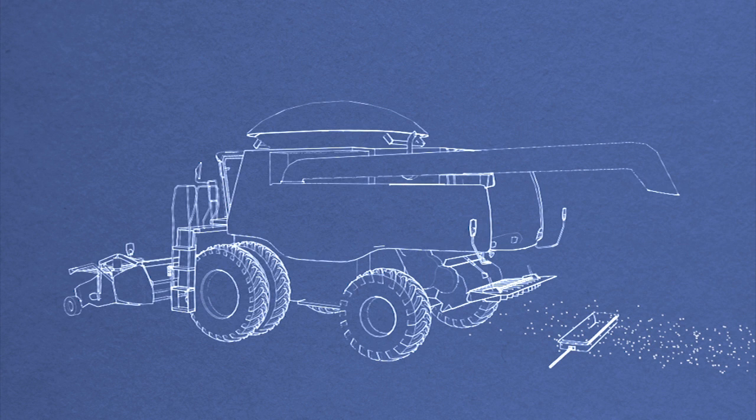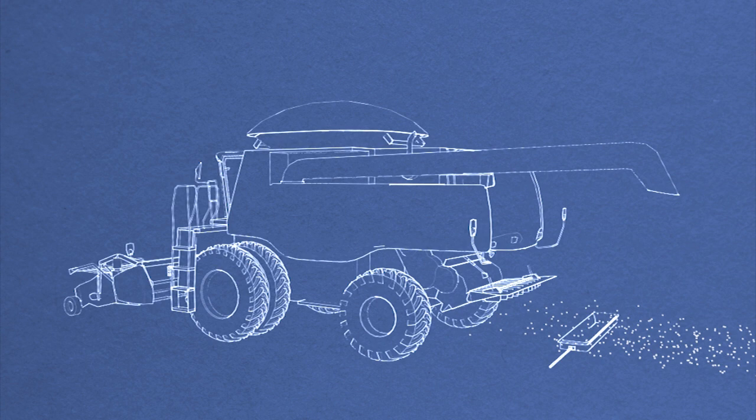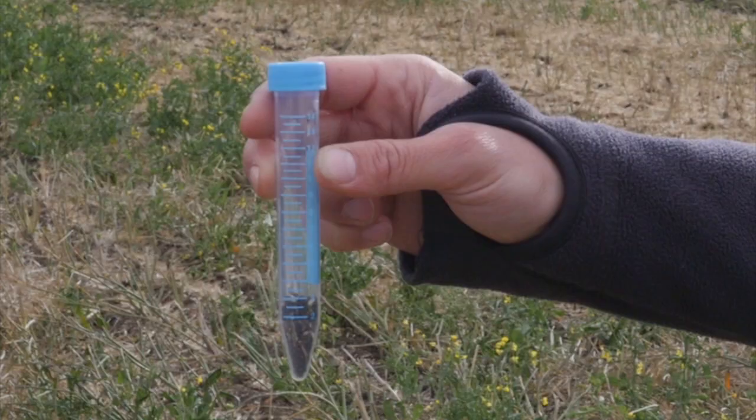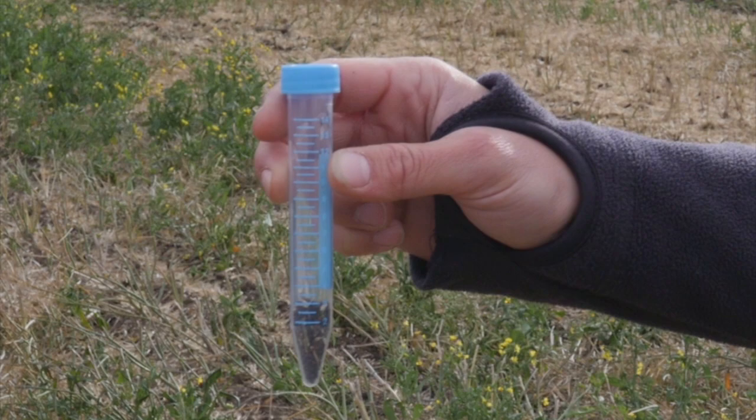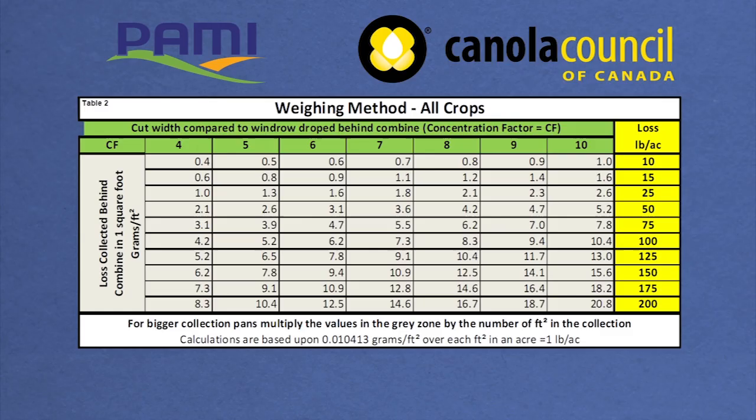There are several methods producers can use to determine what loss they are incurring based on the seed sample collected. For most accurate results, they can use a weight measurement or a volume measurement. The equation for measuring losses is quite involved, so we recommend downloading a smartphone application or using the guide available from PAMI and the Canola Council of Canada.